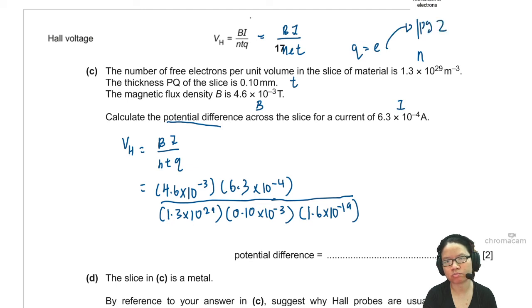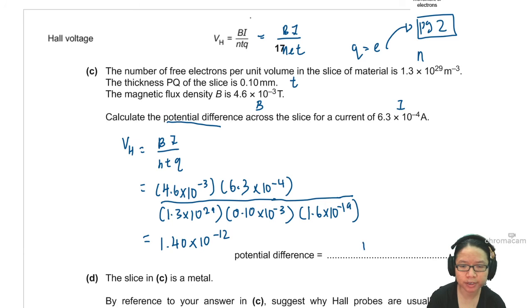What is the VH that you get? Because I got a really small value, like 1.40 times 10 to the power of negative 12. 1.393, but 1.4. Very small. Probably cannot measure. Negative 12.